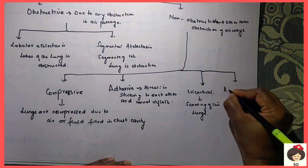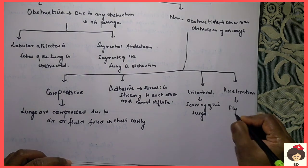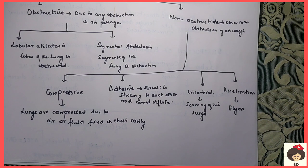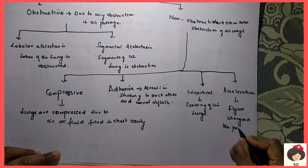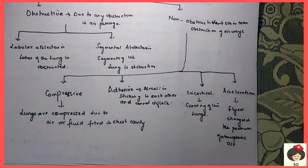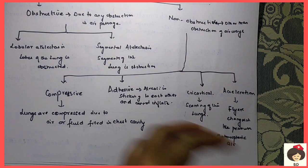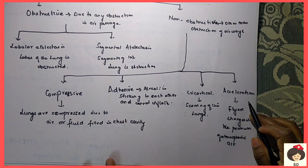Next is acceleration Atelectasis, which is mainly common in flyers — like pilots and air hostesses who frequently travel in flights. This occurs because there is a change in air pressure between ground level and high altitude. Sometimes the alveoli cannot resist or sustain the sudden change in atmospheric pressure, so for a few minutes the alveoli will not get inflated and remain deflated — that is called acceleration type of Atelectasis.